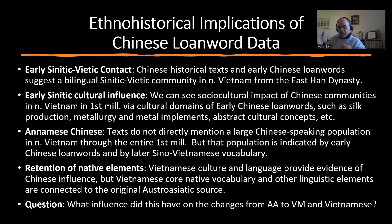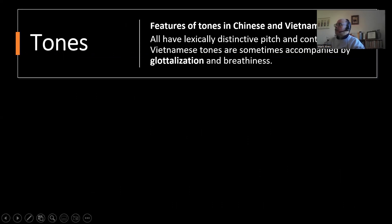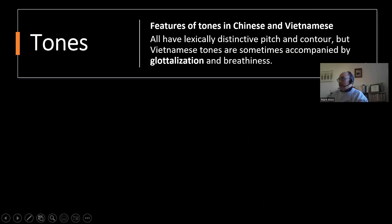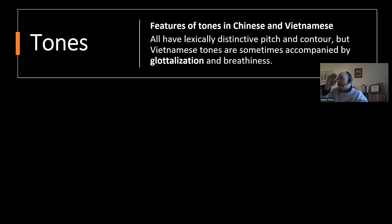How did we get from Austro-Asiatic to modern Vietnamese? The first transition to discuss is tones. Tones appear in all varieties of Chinese, Vietnamese, and other regional languages — they have lexically distinctive pitch and contour, meaning they change the meaning of words. Pitch can be high, medium, or low; contour can go up, down, or stay level. But Vietnamese tones are sometimes accompanied by glottalization and breathiness. That glottal stop I mentioned earlier is part of this.